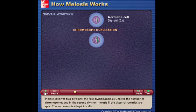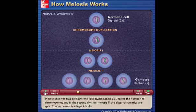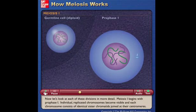Meiosis involves two divisions. The first division, meiosis I, halves the number of chromosomes, and in the second division, meiosis II, the sister chromatids are split. The end result is four haploid cells. Now let's look at each of these divisions in more detail.